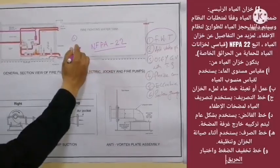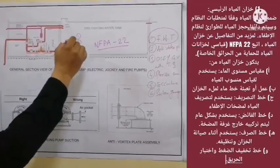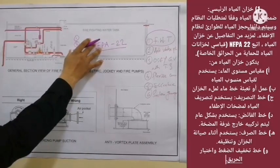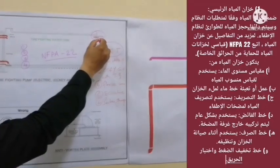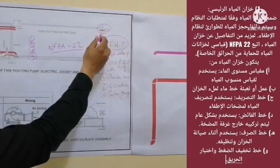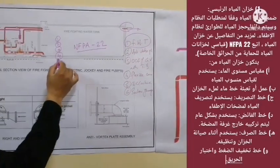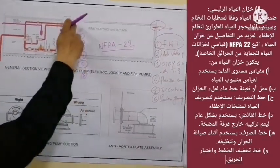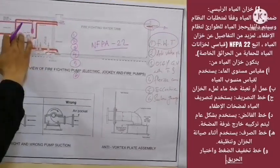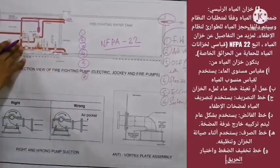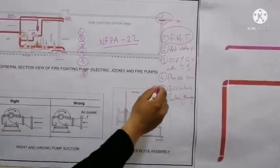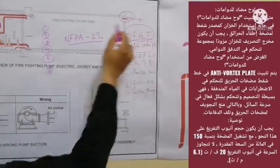Number two, we have a makeup water or filling water line to fill the tank. Number three, we have a discharge line used to discharge water to the fire pump. Number four, we have an overflow drain — this is used in case of overflow and is to be installed outside of the pump room. Number five, we have a test and relief line — this detail we will discuss when we start the discussion for the discharge line.